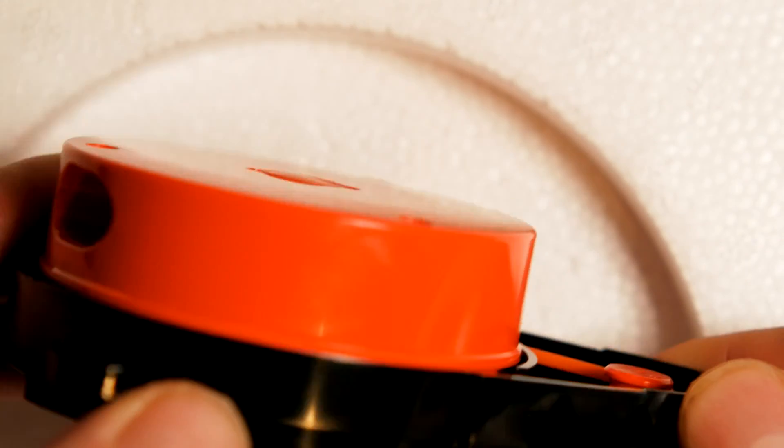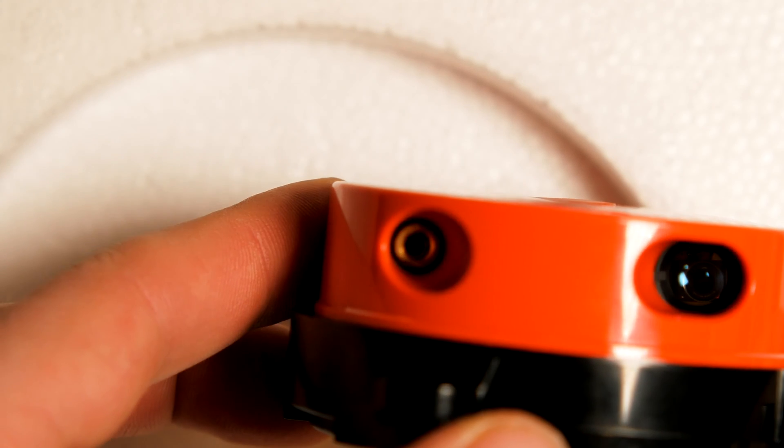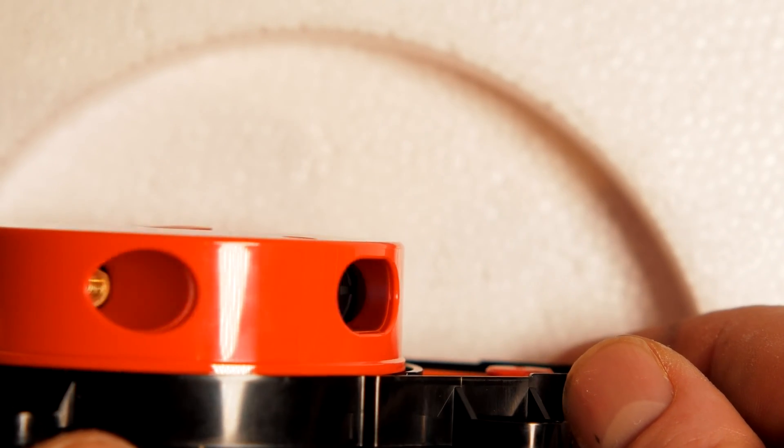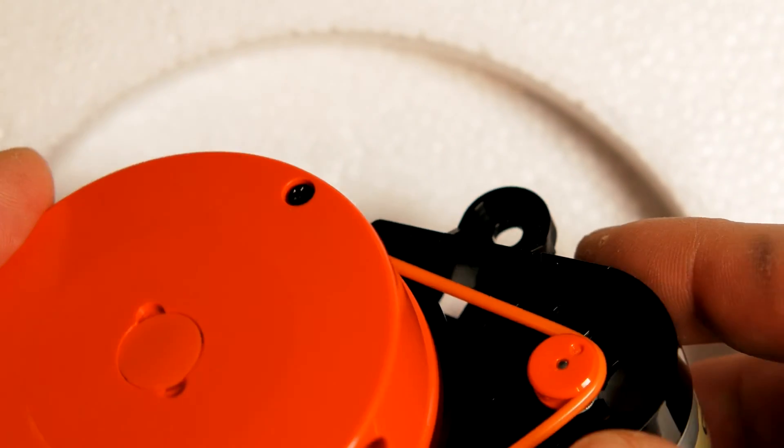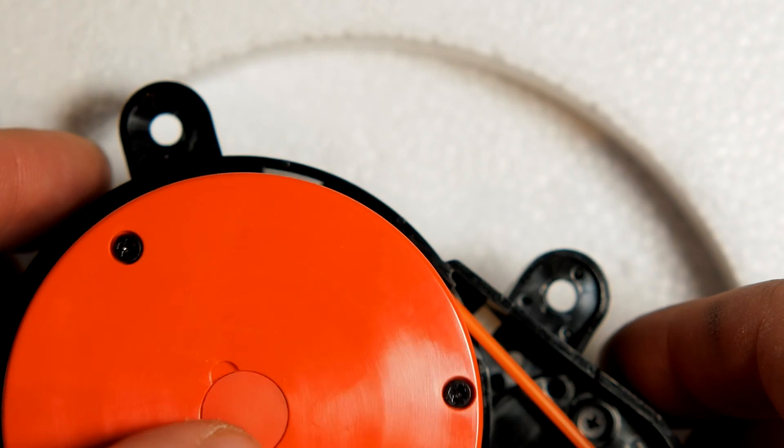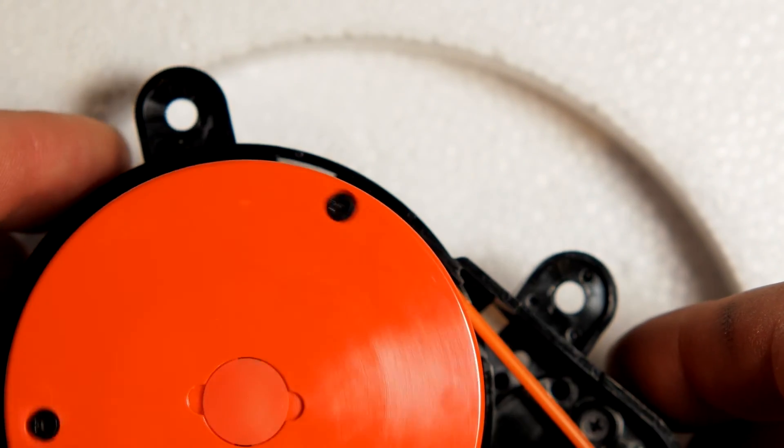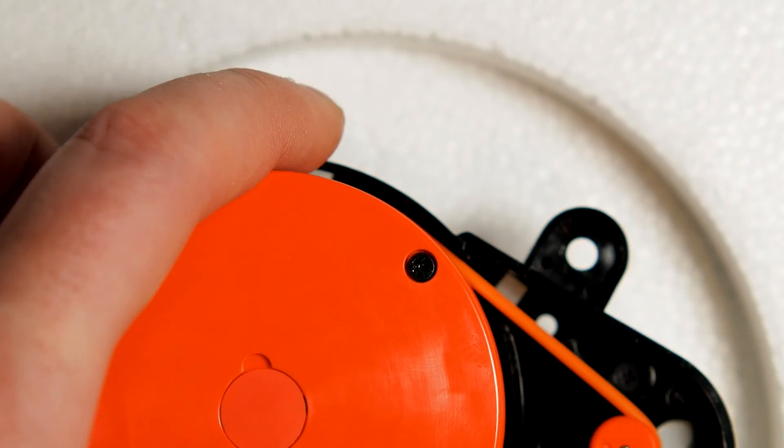Inside the sensor you have a laser diode and a line camera which does triangulation to measure distance. As it spins, you get a radar-like picture of the environment. This is the map used by the robot for navigation.